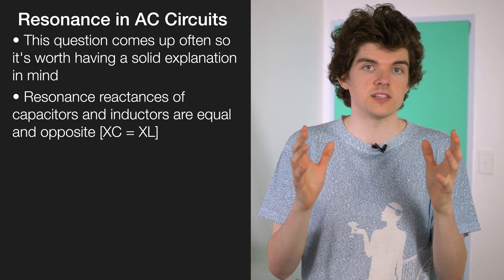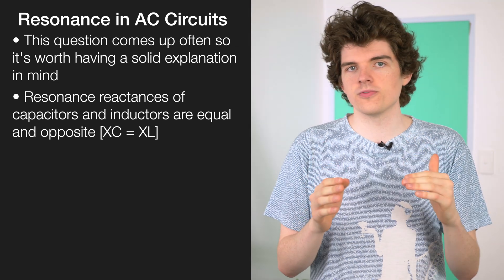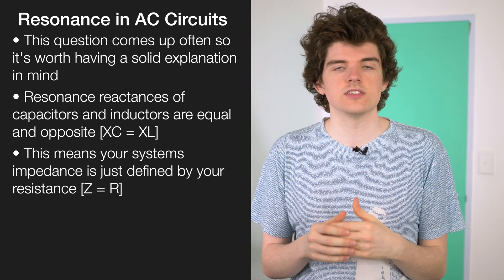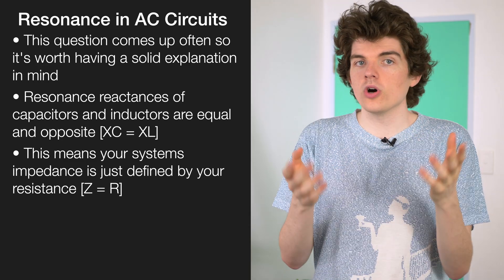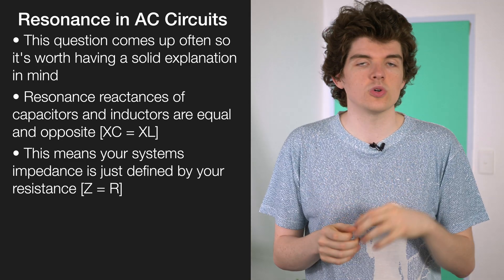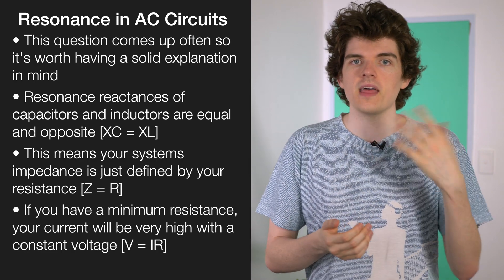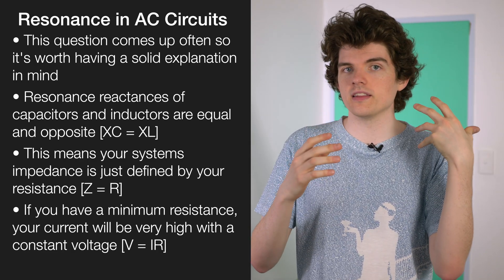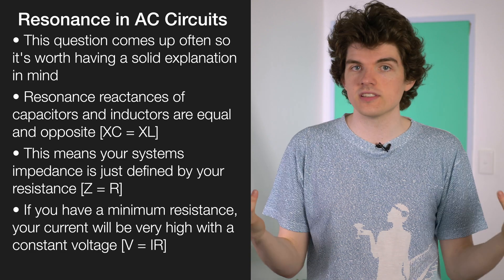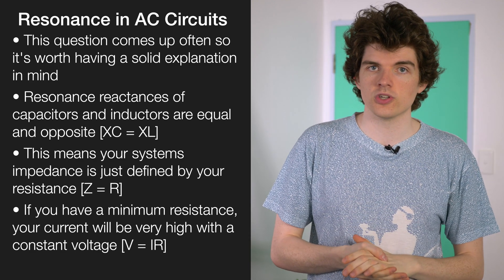This means that your system's impedance is just defined by your resistor's resistance, which also means it's at a minimum. Because you have a minimum resistance, your current is going to be very high if you have a constant voltage. That means you're going to get the brightest light or the loudest sound coming out of your circuit at resonance.